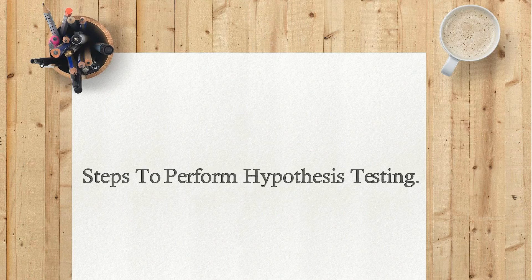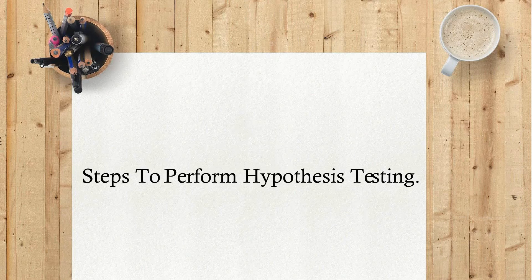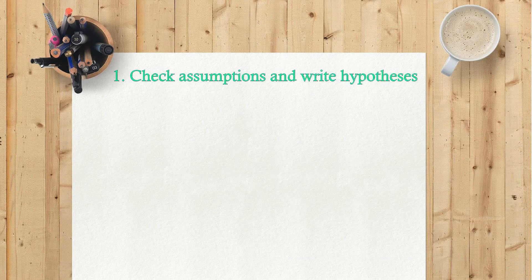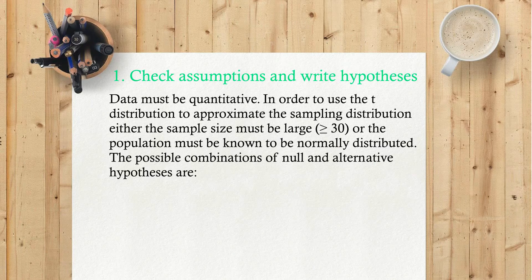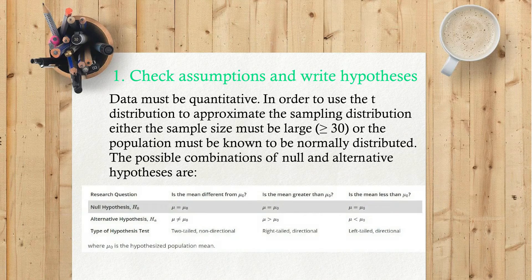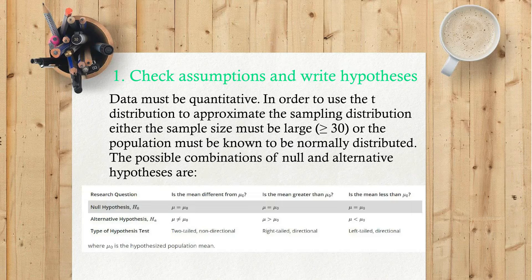Steps to perform hypothesis testing. 1) Check assumptions and write hypotheses. Data must be quantitative in order to use the t distribution to approximate the sampling distribution. Either the sample size must be large or the population must be known to be normally distributed. The possible combinations of null and alternative hypotheses are where μ₀ is the hypothesized population mean.